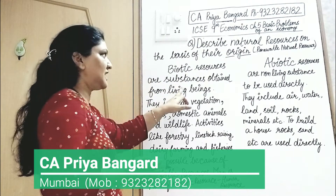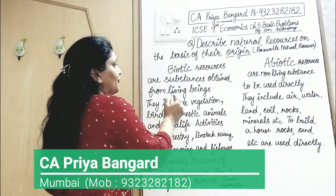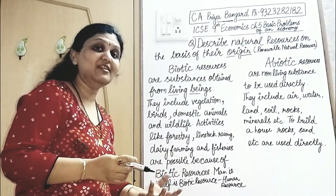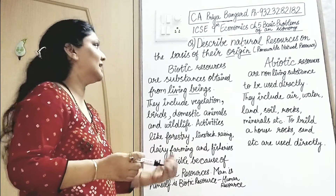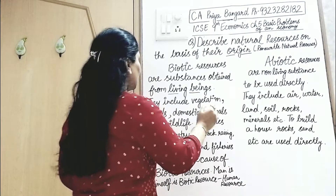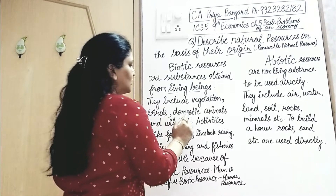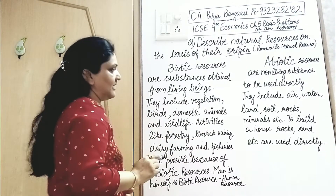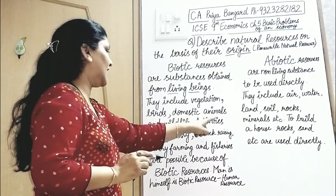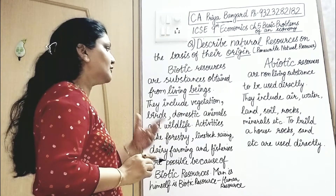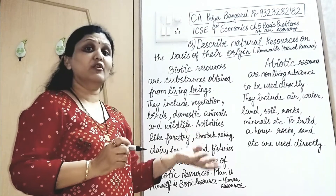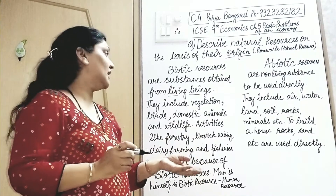What are biotic resources? Biotic resources are substances obtained from living beings. Substances which are obtained from living beings are called biotic resources. They include vegetation, birds, domestic animals, and wildlife.